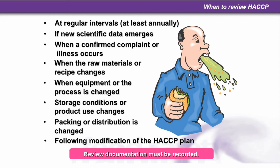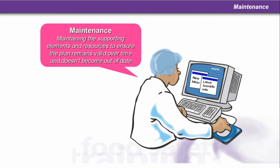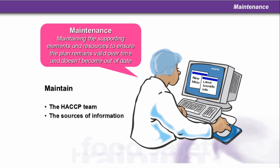All review documentation must be recorded. It's a paper-based exercise, though you can add a digital backup. It must be able to be reviewed by environmental health departments and any other external or internal auditors. There is a lot of material that obviously needs wet signatures. Maintenance is maintaining the supporting elements and resources to ensure the plan remains valid over time and doesn't become out of date. You need to maintain the HACCP team, the sources of information, and the HACCP documentation.